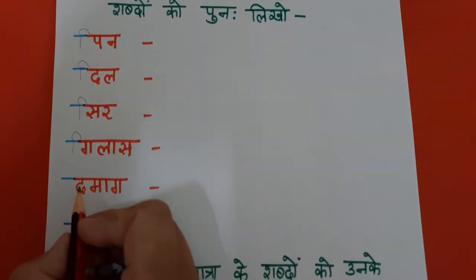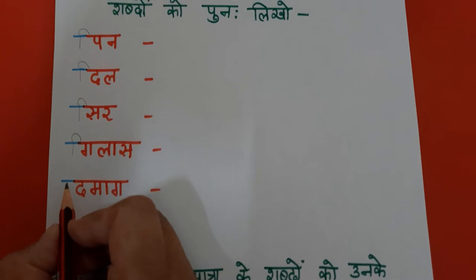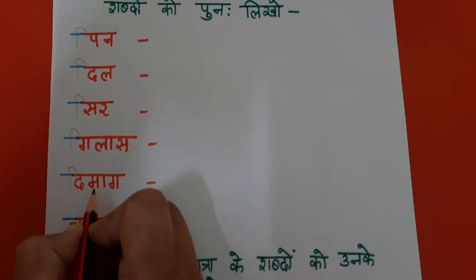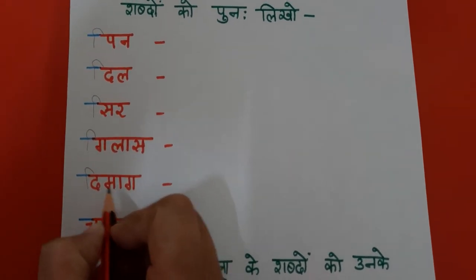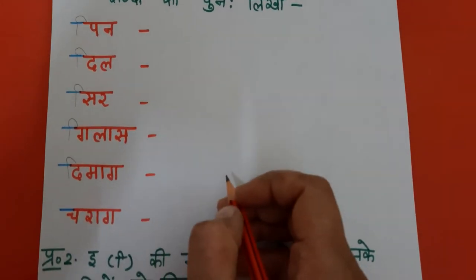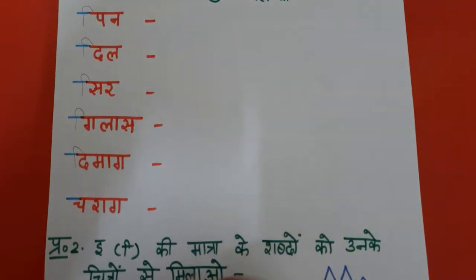Uske baad da — da appe chhoti E ki maatra di, mapa aaki maatra maa, dimaaga. Yaha pe aapko dimaaga likhna hai.